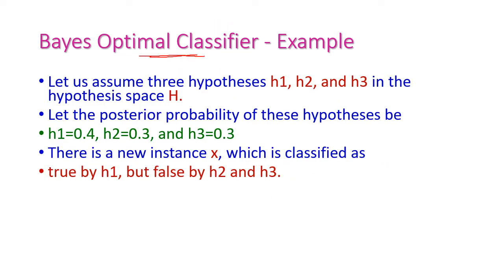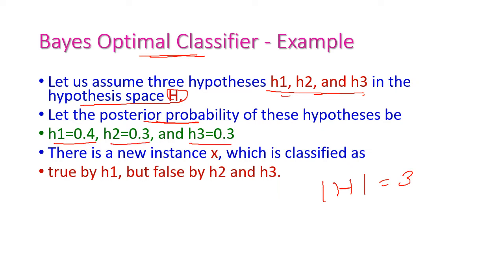Let us see one example for the Bayes' Optimal Classifier. There are three hypotheses — H1, H2, and H3 — in the hypothesis space, so the total number of hypotheses is 3. The posterior probability of H1 is 0.4, H2 is 0.3, and H3 is 0.3. A new instance X is coming for classification: H1 classifies it as true, while both H2 and H3 classify it as false.